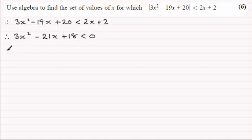I'm going to divide through by 3, you don't have to, but it does seem as if it's going to make it a lot easier. So we're going to get x² - 7x + 6, and that's less than 0.